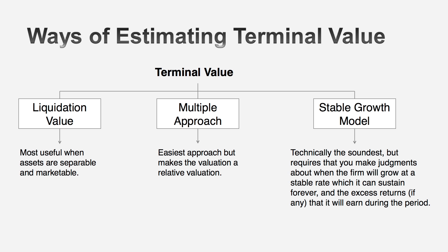There are three approaches used to estimate terminal value. In my view, one of these three should never be used, but it's actually the predominant approach that ends up being used. Here's the first one: at the end of year five, ten, or fifteen, you can shut the business down and sell off its assets — that's called liquidation value. When I value private businesses, that is pretty much how I estimate terminal value almost all of the time, because when the owner ends a business, it gets sold off in pieces.